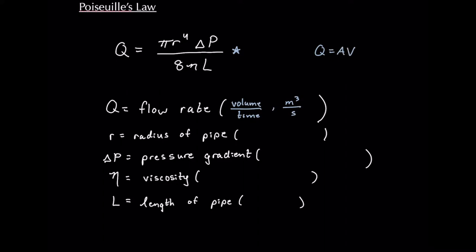As you may have seen an equation where Q equals A times V, Q is still our flow rate but V is going to be the linear velocity of the flow that we're looking at. So don't get Q and V mixed up. Make sure you know what they're asking for in the question.